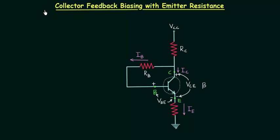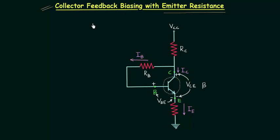In this lecture I will explain collector feedback biasing with emitter resistance. This biasing scheme is the combination of both emitter biasing and collector feedback biasing, and like always we have to find out the operating point.